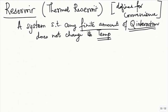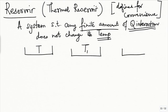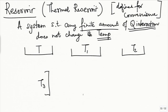A reservoir is characterized by its temperature and will be represented by a tray or bracket with the temperature written in it. So this is a reservoir at temperature T, this is reservoir at temperature T1, this is reservoir at temperature T2, T3, T4 and so on. For every temperature you want, you can set up a reservoir.